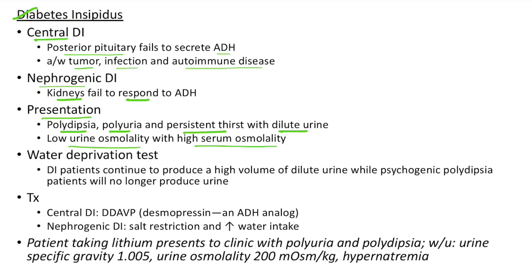We can do a water deprivation test to differentiate diabetes insipidus from psychogenic polydipsia. When we do the water deprivation test, diabetes insipidus patients continue to produce a high volume of dilute urine, while psychogenic polydipsia patients will no longer produce urine. For treatment, for central diabetes insipidus we can give DDAVP or Desmopressin, which is an ADH analog. For nephrogenic diabetes insipidus, we have to advise salt restriction and increased water intake.